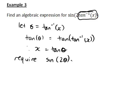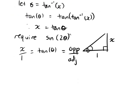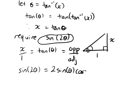We can think of x as x over 1, and tan theta in a right-angled triangle is the opposite over the adjacent. So we let the opposite side be length x and the adjacent side be length 1. Since we need sine of 2 theta, which involves a double angle, we should write it in terms of single angles. The identity is: sine of 2 theta equals 2 times sine theta times cos theta.